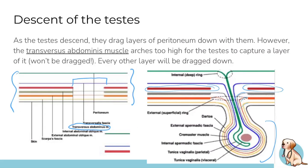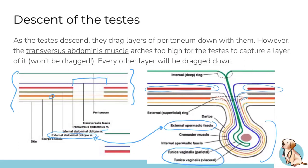As these layers are pulled down, most of them adopt different names, which is really important to know. For example, the external abdominal oblique muscle in the pelvis — following it down into the scrotum — becomes renamed the external spermatic fascia. You need to memorize what each layer becomes so you're not confused by all the different names. You can also see the tunica vaginalis here, which is the remnant of the processus vaginalis in males, with its parietal and visceral layers.